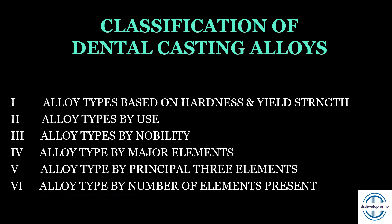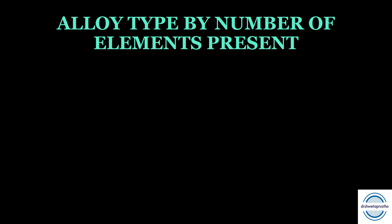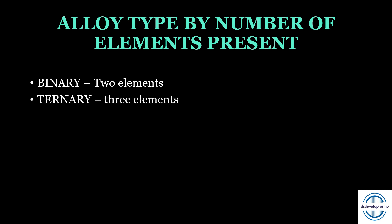The last classification is alloy types by the number of elements present in the alloy. They can be binary — when two elements are present; ternary — when three elements are present; or quaternary — when four elements are present in the alloy. With this we are done with all the classification systems of dental casting alloys.